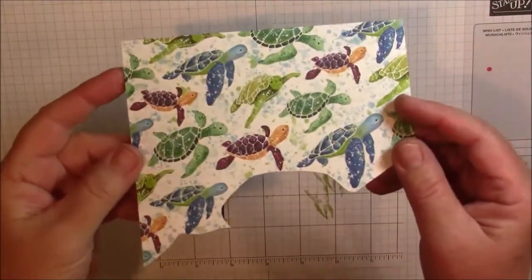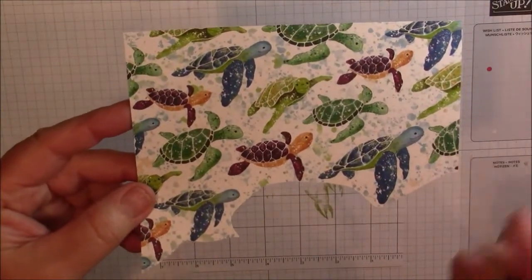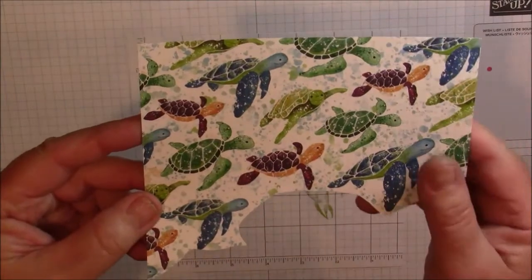We are also using the Designer Series Paper for some of our images. We are going to use this one with all these sea turtles on them. These turtles are all different colors and we are going to be using a few of the green ones.